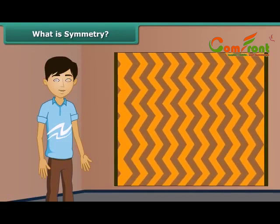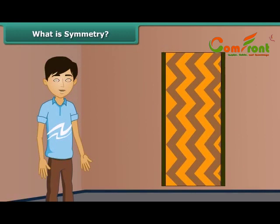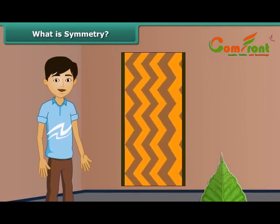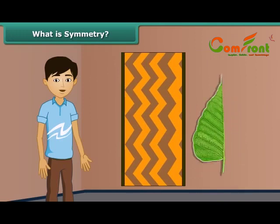Children, look at the rug. When you fold it, the left and right halves match each other. Thus, the rug is said to be symmetrical. Look at this leaf — on folding the leaf, its two halves match each other, thus it is symmetrical.